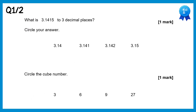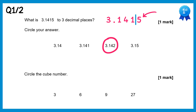For this first question we need to round a number to three decimal places. We go to the third decimal place, that's the 1, and draw a line after this. We check the number after the line — that's this 5 here — and if it's 5 or greater we round up. So that 1 becomes a 2, giving us 3.142.